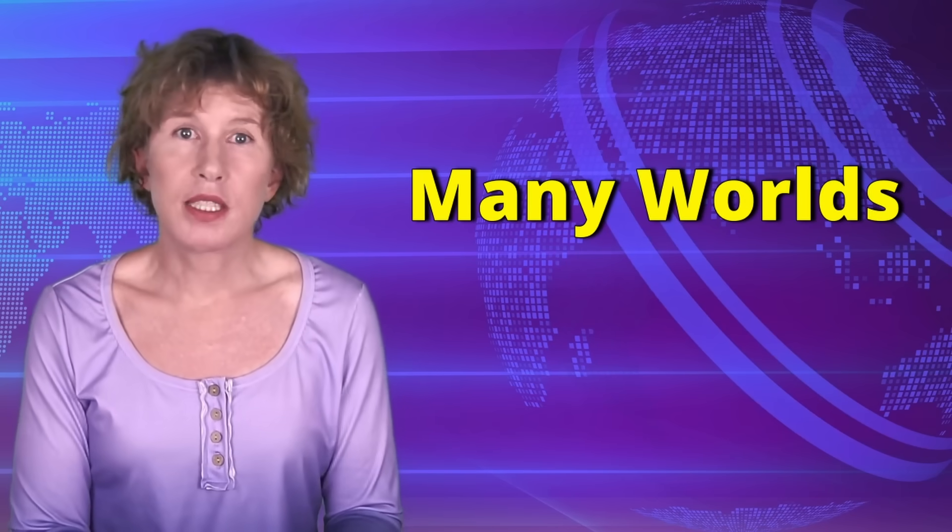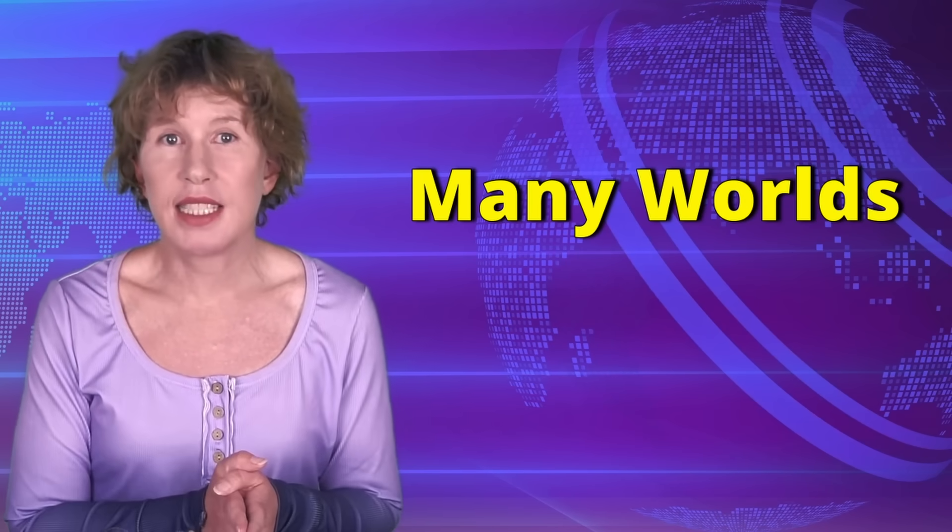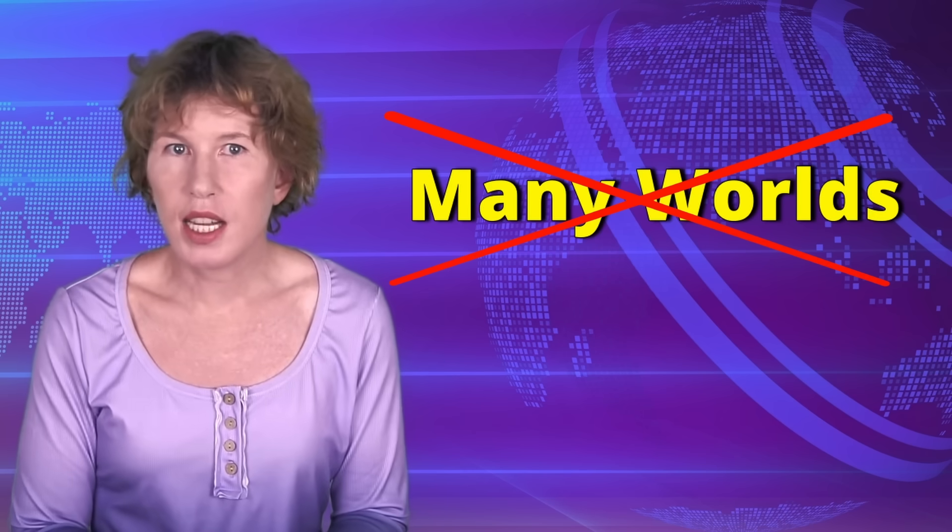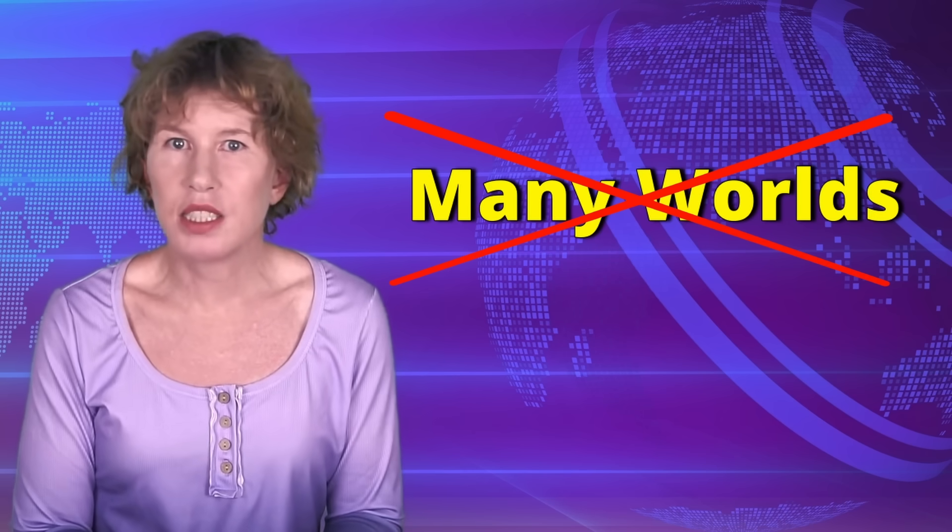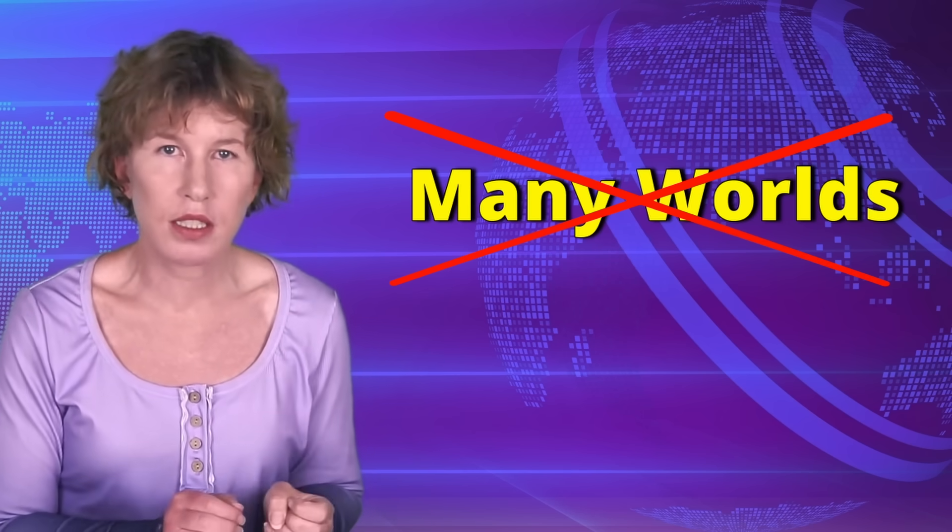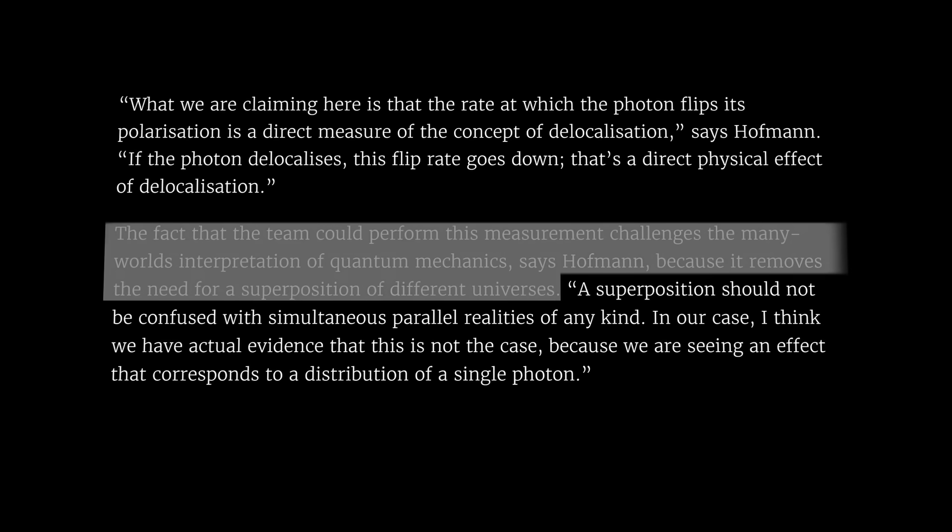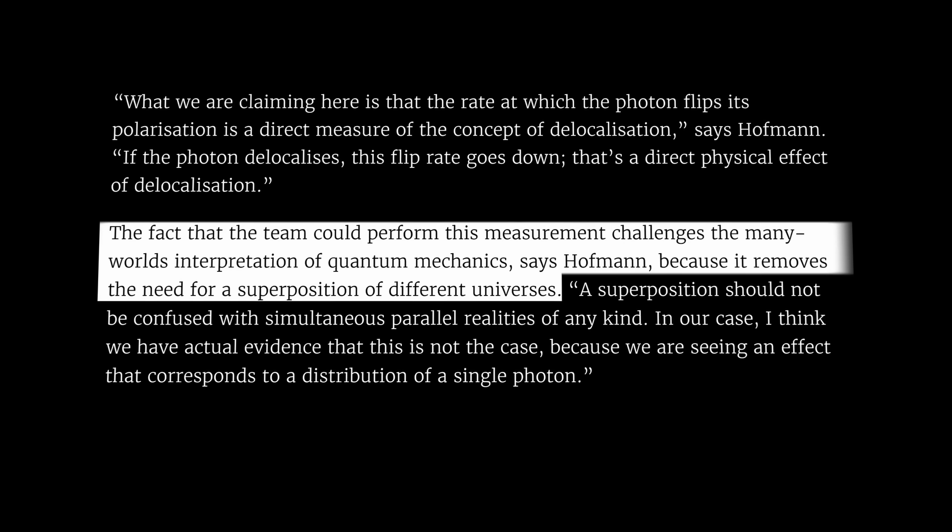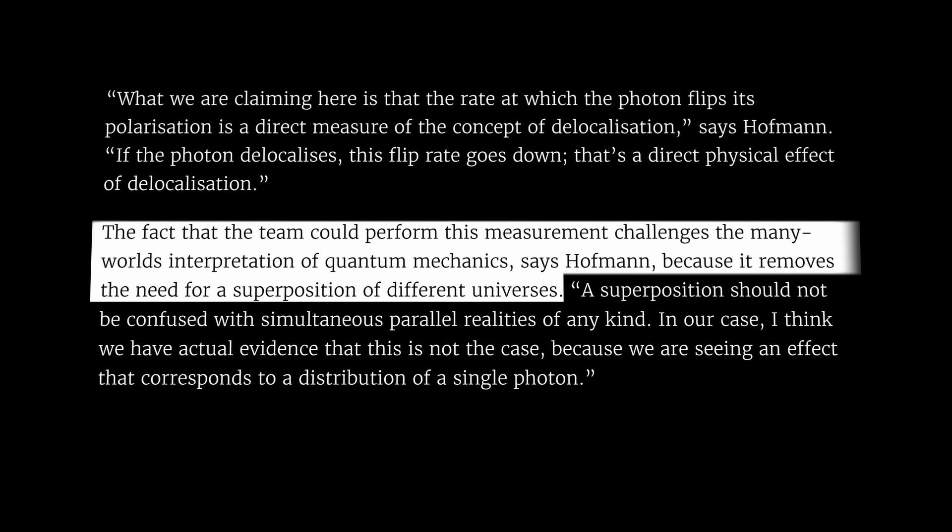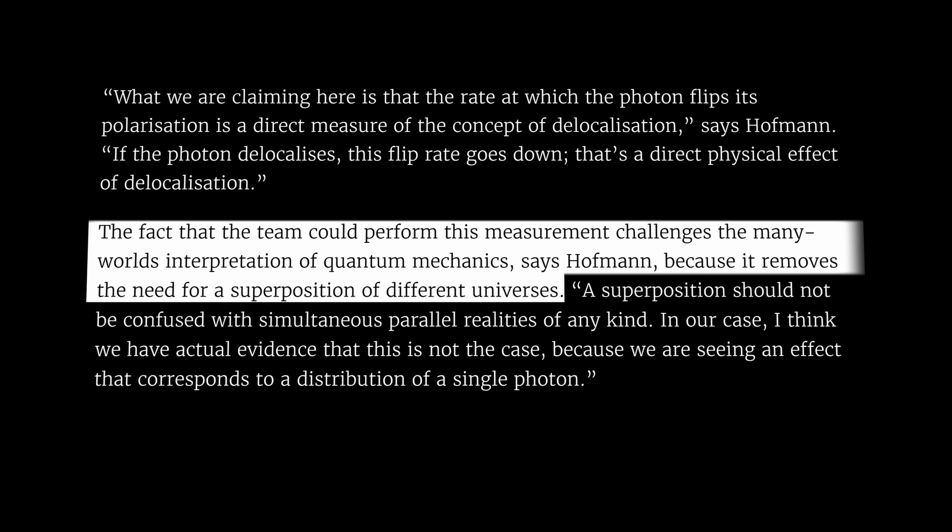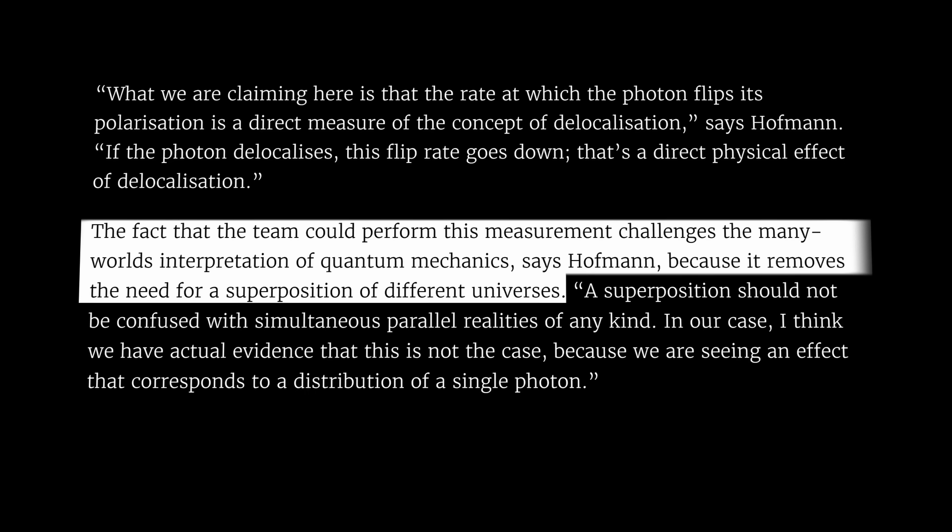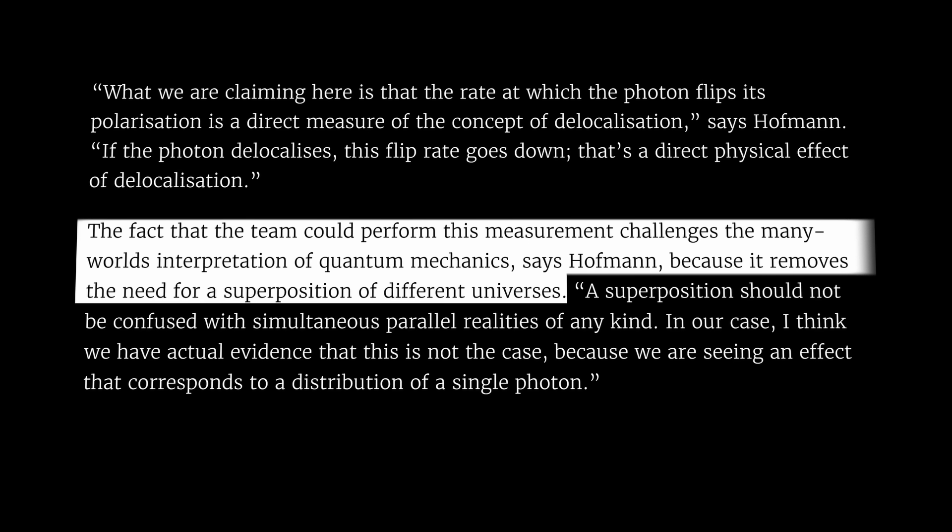The authors of the new paper say they have evidence against many worlds because they've proved for the first time that a photon can go two paths at once in this universe. According to New Scientist, the fact that the team could perform this measurement challenges the many-worlds interpretation of quantum mechanics, says Hofmann, one of the authors of the paper, because it removes the need for a superposition of different universes.